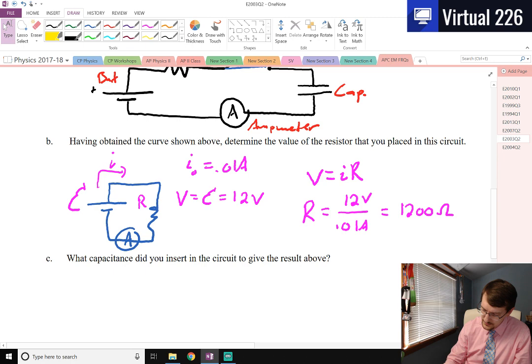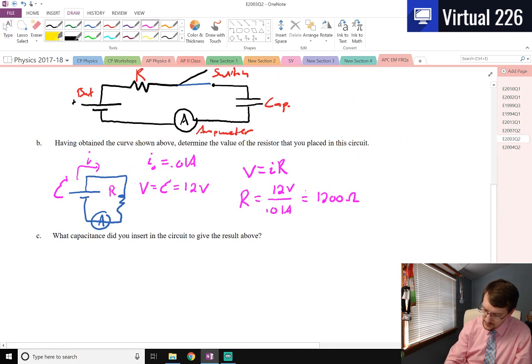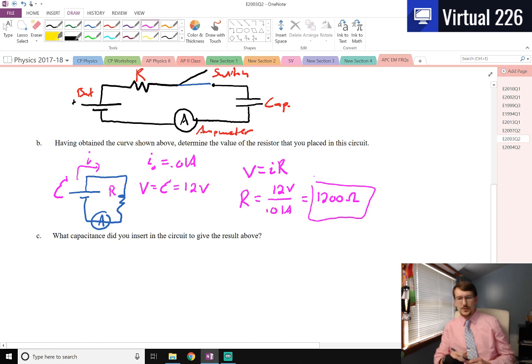12 divided by 0.01 is 1200 Ohms. Cool. That was easy. So we can box that. Feel good about that. Not too bad. That's the most straightforward way to do that.